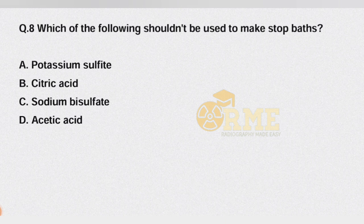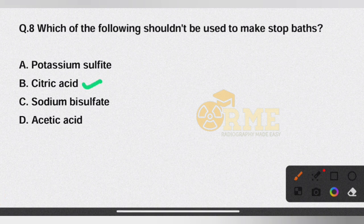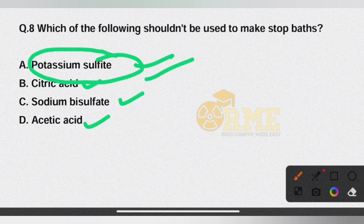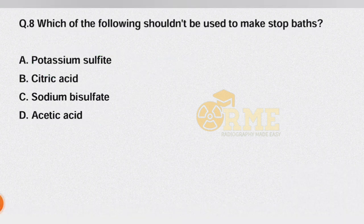Question number 8: which of the following should not be used to make stop baths? This is a darkroom question. The options are potassium sulfite, citric acid, sodium bisulfate, and acetic acid. Citric acid is used to make stop baths, so citric acid should not be excluded — it is used for stop baths.